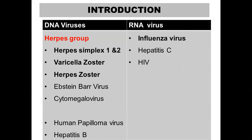The DNA virus examples include the herpes group of viruses — that is herpes simplex 1 and 2, abbreviated as HSV1 and HSV2, then varicella zoster, herpes zoster, Epstein-Barr virus (EBV), and cytomegalovirus (CMV). Other than that we have human papilloma virus and hepatitis B virus. Under RNA viruses you have the influenza virus. So the herpes group of viruses are DNA viruses, whereas influenza viruses are RNA viruses.